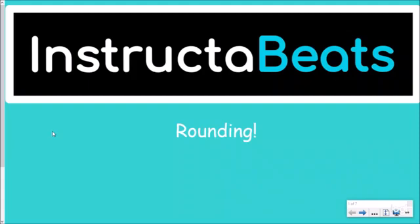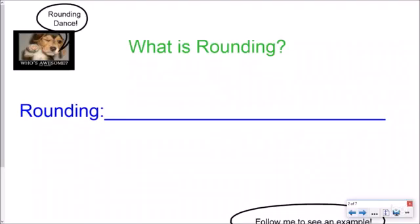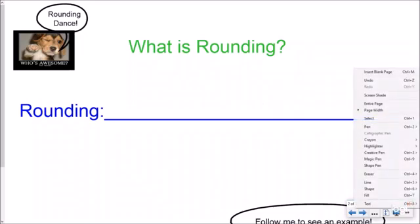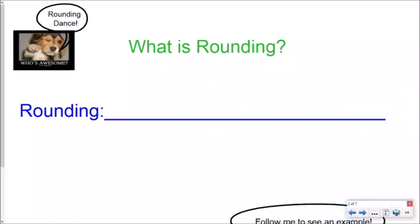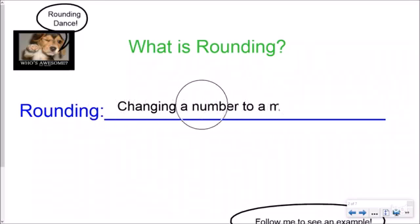So today we're talking about rounding, and the first thing I want to talk about is really what is rounding. When we're talking about rounding, what we're doing is taking a number and changing it to a more convenient value. You might not want to know exactly that number—you might want to round it to a more convenient value, such as the nearest tens, hundreds, or thousands place.